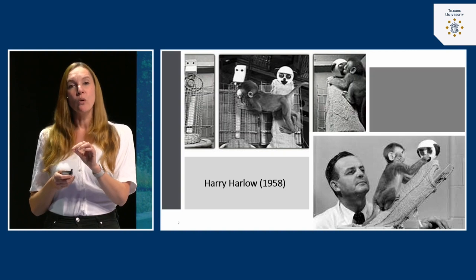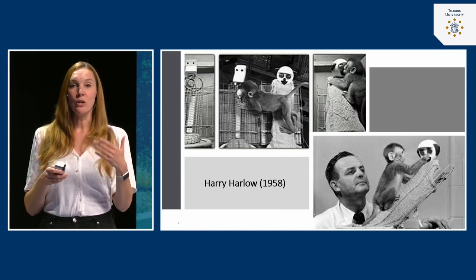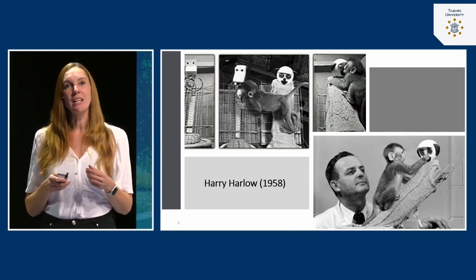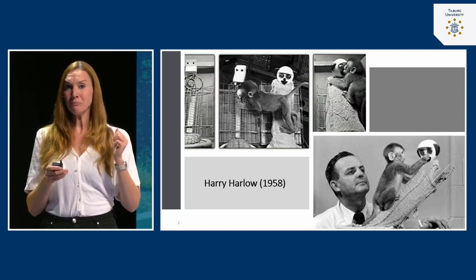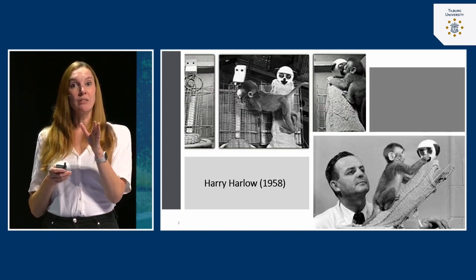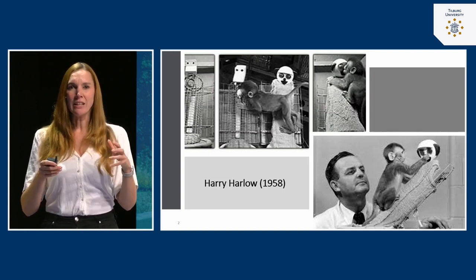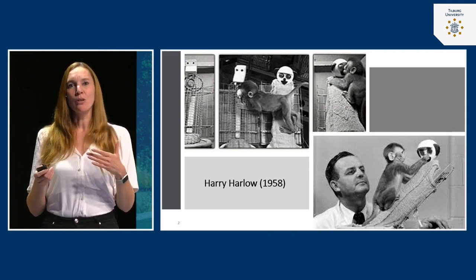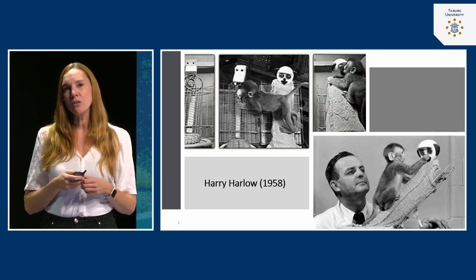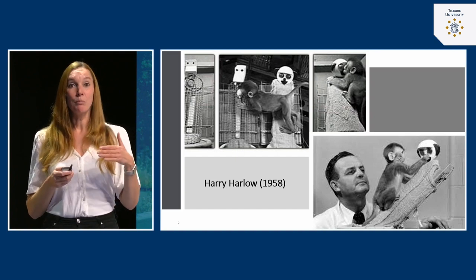What Harry Harlow showed was that he created surrogate mothers for the infant monkeys. Sometimes these surrogate mothers provided food, which would be very important for the baby monkeys. He created a wire mother that provided milk — so provided food. He also provided a surrogate mother that did not provide any milk or food, but had a very soft, warm appearance, simulating what the real mother would look like. And what Harlow showed was that providing comfort was even more important for the baby monkeys than providing food.